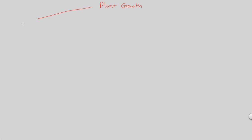Plant growth is characterized by something known as indeterminate growth. Indeterminate growth can be understood as growth throughout the plant's life. That's the key word here — the growth is always happening throughout the plant's life, for the most part, in most plants. That's what indeterminate growth really encompasses.